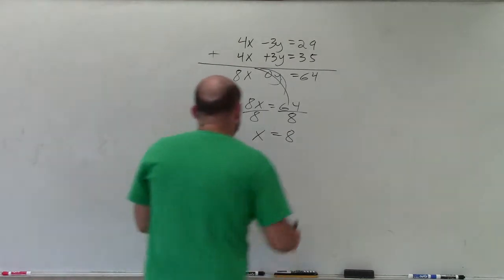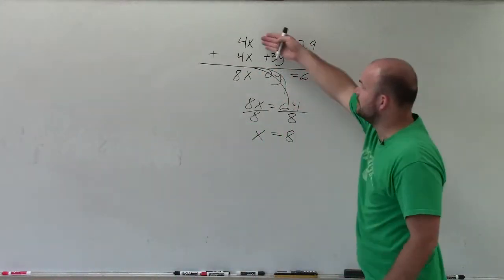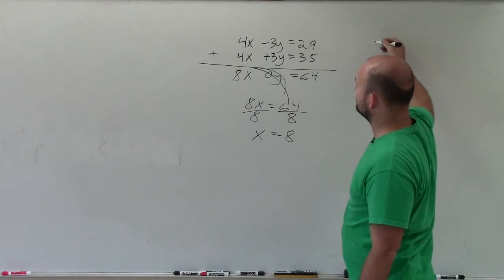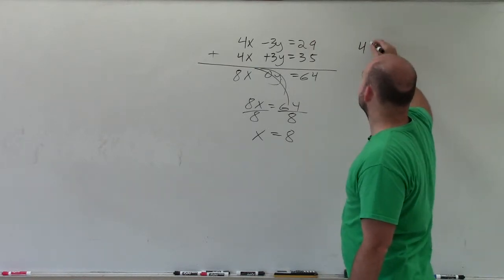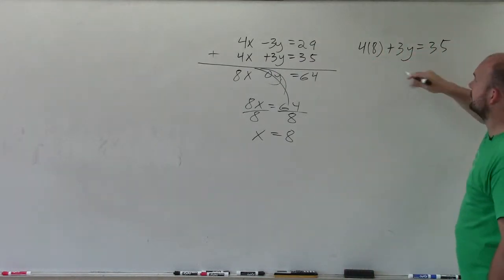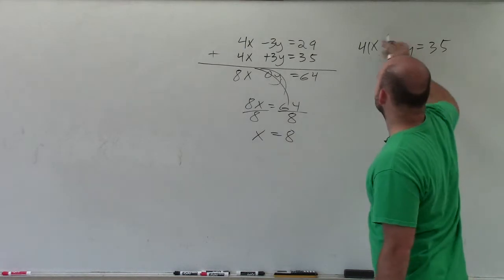Now, to determine the value of y, all I simply need to do is plug this value into one of these equations. I'll choose the top one, and it just looks like, actually, you know, let's choose the bottom one. So 4 times 8 plus 3y equals 35. I'm sorry, 4 times x, right?